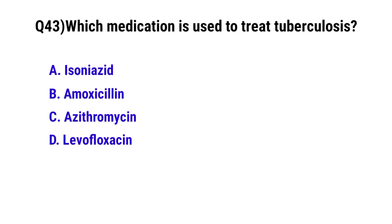Question number 43: Which medication is used to treat tuberculosis? The correct option is A: Isoniazid.